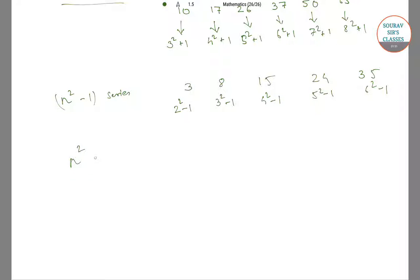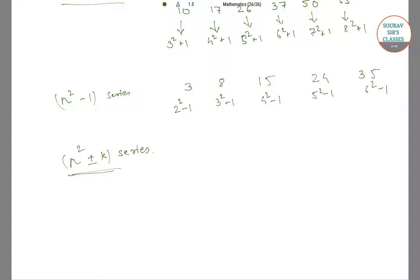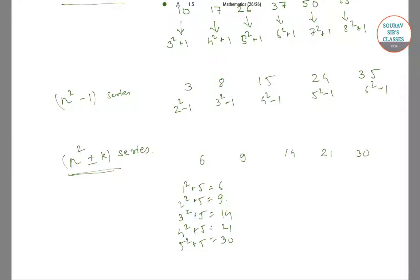In general, these can be written as the n squared plus or minus k series, where each number can be written in this form. For example, the series 6, 9, 14, 21, 30 — here each number can be written as 1 squared plus 5 equals 6, 2 squared plus 5 equals 9, 3 squared plus 5 equals 14, 4 squared plus 5 equals 21, and 5 squared plus 5 equals 30. So each number can be written in the form n squared plus 5.